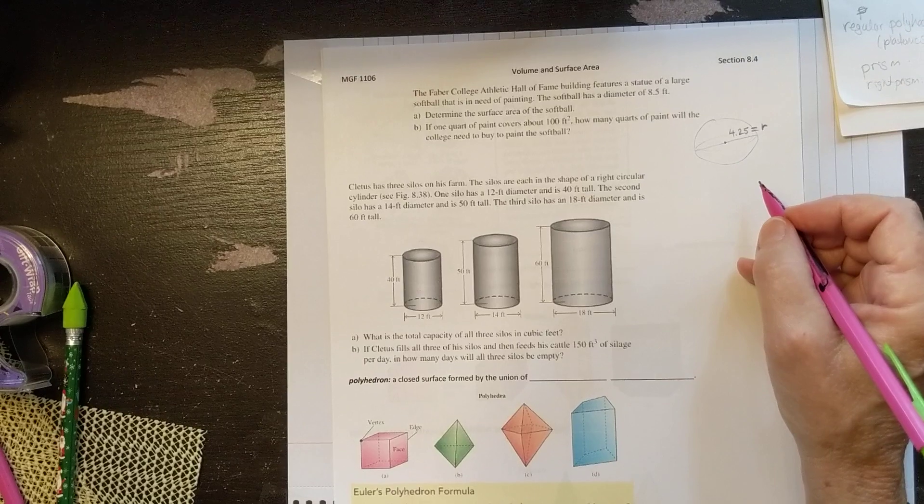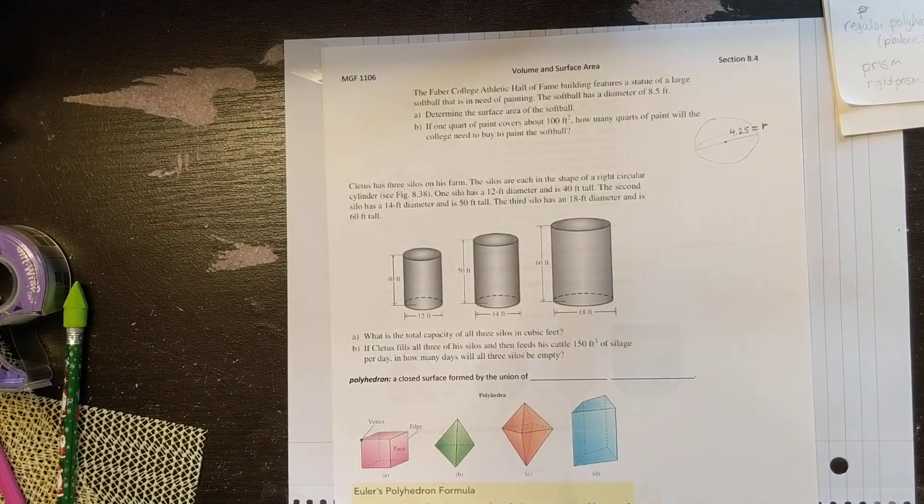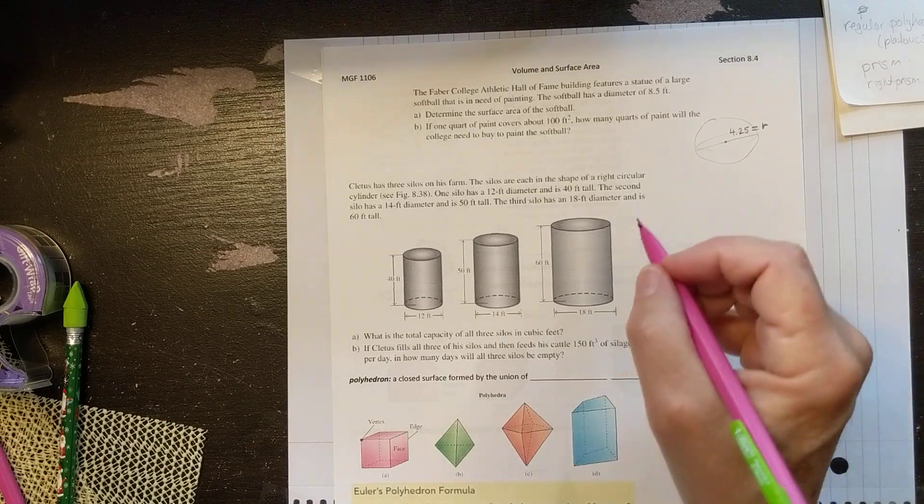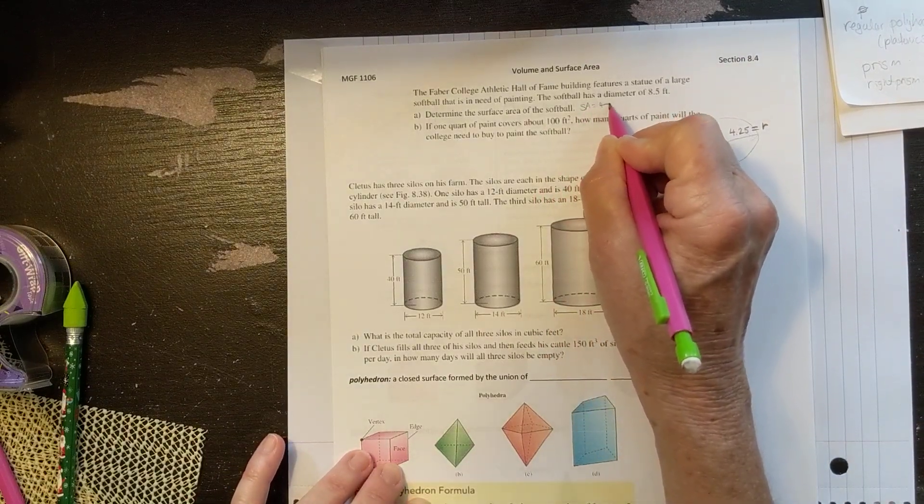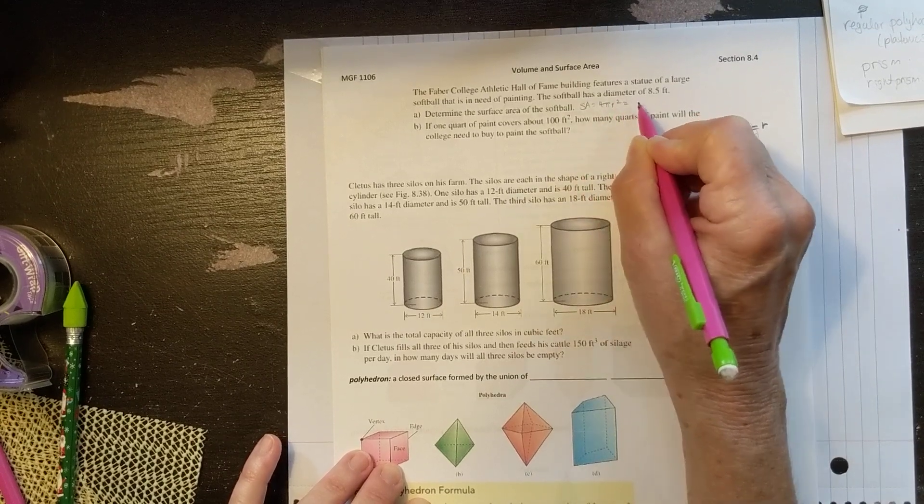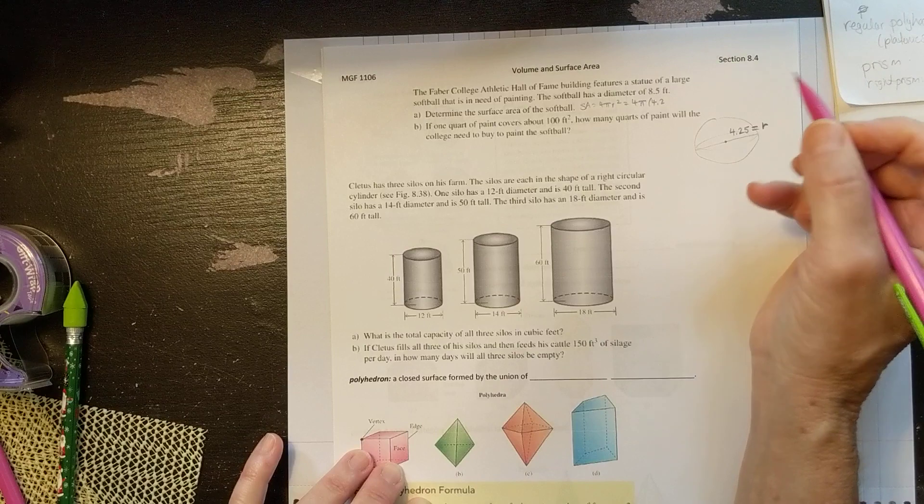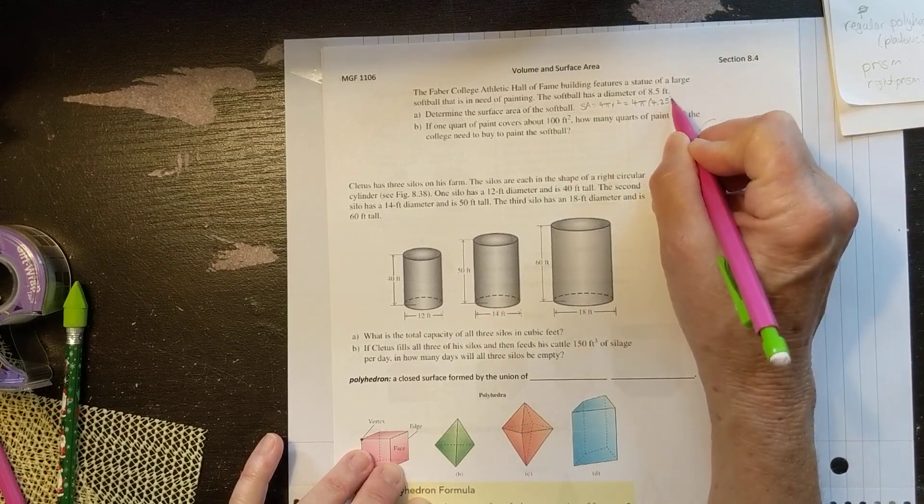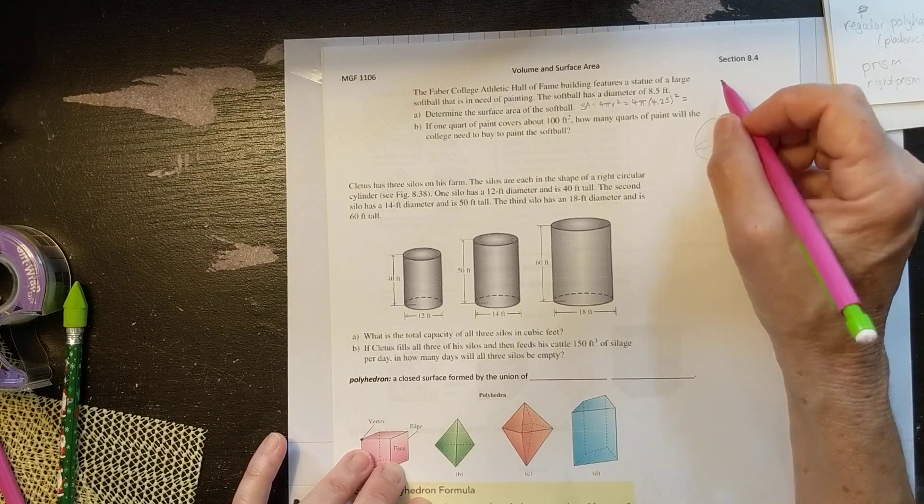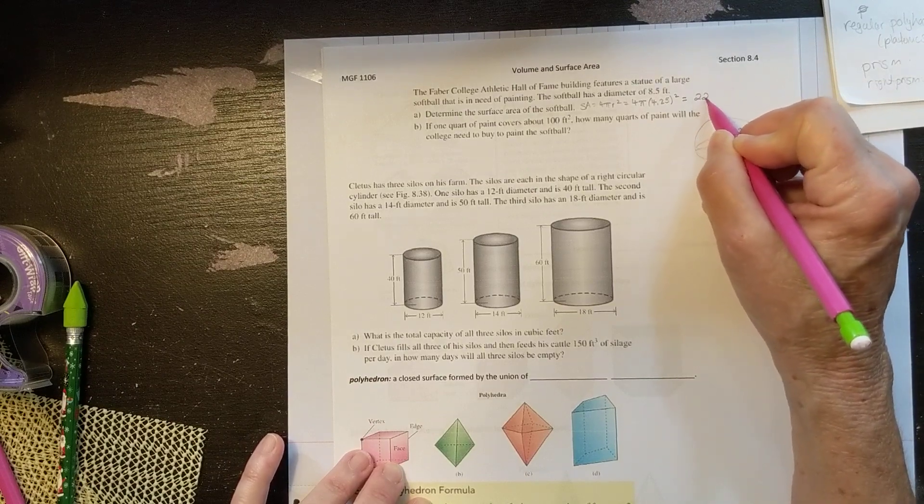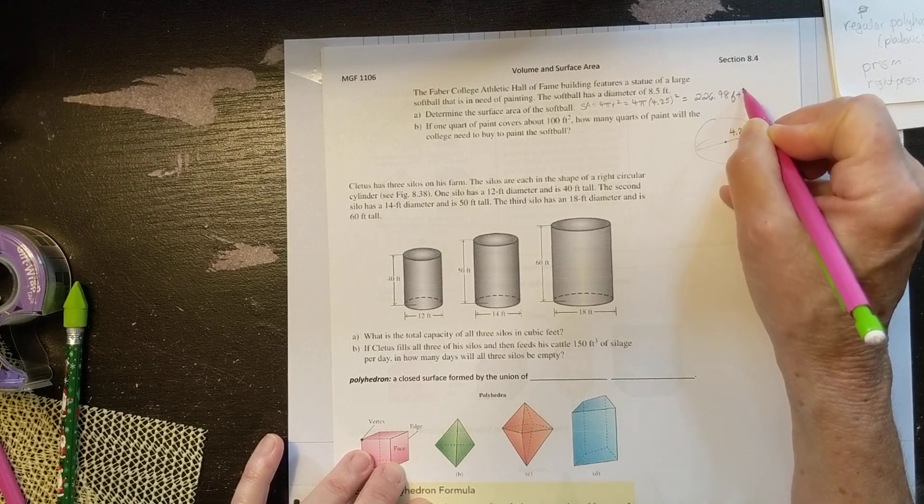The surface area for a sphere is 4πr². So that's 4 times π times 4.25 squared. And when I multiply all that together, I get 226.98 square feet.